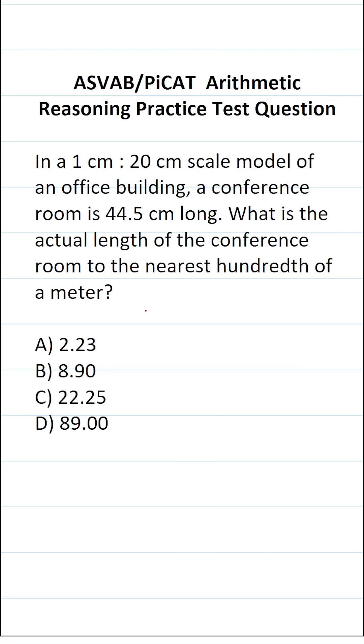So in order to solve this one, we're going to use a proportion to get started. More specifically, I'm going to fill in the left-hand side of the proportion using this scale here. It says 1 centimeter in the model corresponds to 20 centimeters in the actual office building. We know that the conference room on the scale model is 44.5 centimeters long, and we want to know its actual length, which is unknown, so we'll call that X.